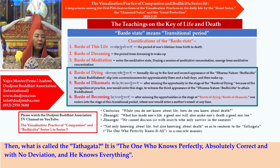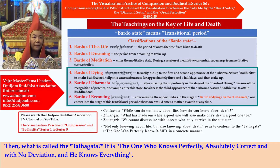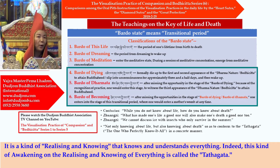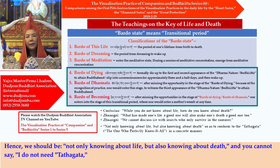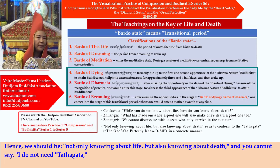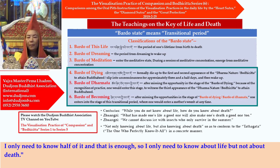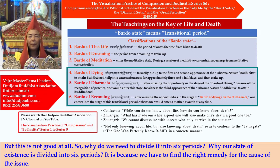What is called the Tathagata? It is the one who knows perfectly, absolutely correct and with no deviation — it is a kind of realizing and knowing that knows and understands everything. This kind of awakening on the realizing and knowing of everything is called the Tathagata. Hence, we should not only know about life but also about death. You cannot say I only need to know half of it — only about life but not about death. This is not good at all. So why do I need to divide it into six periods? It is because we have to find the right remedy for the cause of the issue.